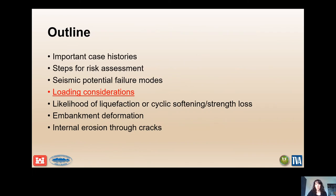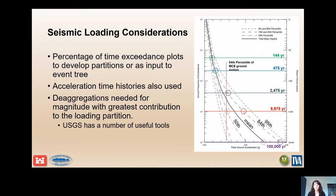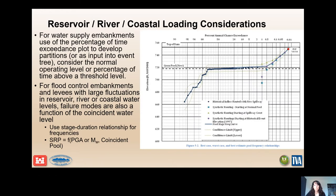Moving to loading considerations: a common plot of annual exceedance versus peak ground acceleration is used. The most common approach is to develop load bins where changes in performance are expected. For example, an earthquake with a return period of 475 years or less may cause little to no damage; loads between the 475-year and 2,500-year earthquake may cause 2 to 5 feet of deformation; loads between the 2,500-year and 10,000-year earthquake could cause 5 to 10 feet of deformation; and anything over the 10,000-year earthquake may cause deformation greater than 10 feet. For water supply embankments, the percentage of time exceedance plot is used to develop partitions for the event tree.